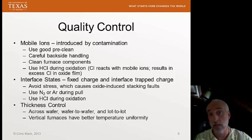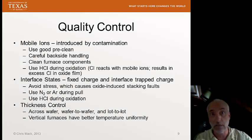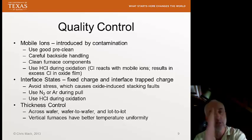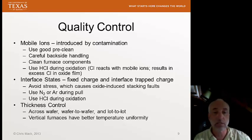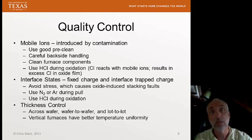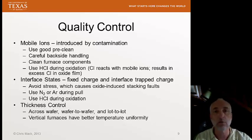The other aspect of quality we worry about in oxidation is thickness control. We need to ensure we get the right thickness and uniformity — good thickness control across any individual wafer, good wafer-to-wafer control as we stack all wafers in the boat, and good lot-to-lot thickness control in a manufacturing environment. It turns out vertical furnaces have better temperature uniformity and therefore better thickness control. Any change in temperature results in a change in thickness because it affects the growth rate. So we need good temperature control if we want good thickness control. Why do vertical furnaces have better temperature uniformity? Think about why that might be true.